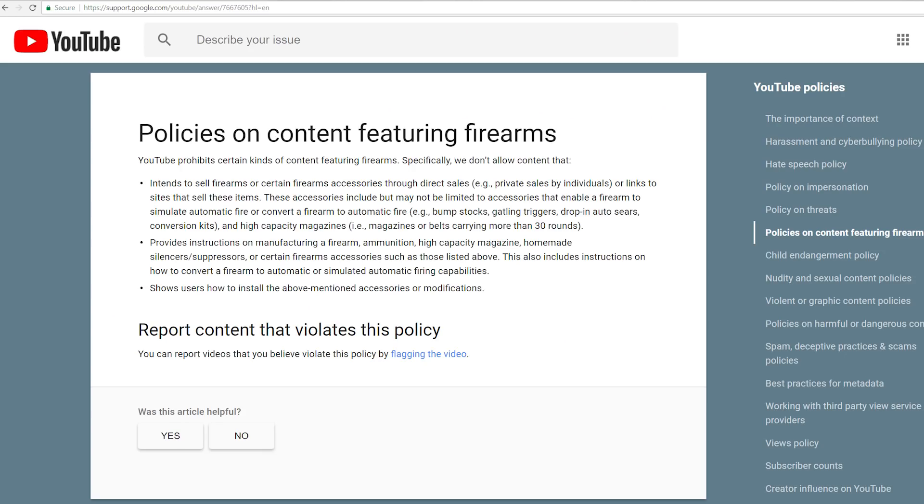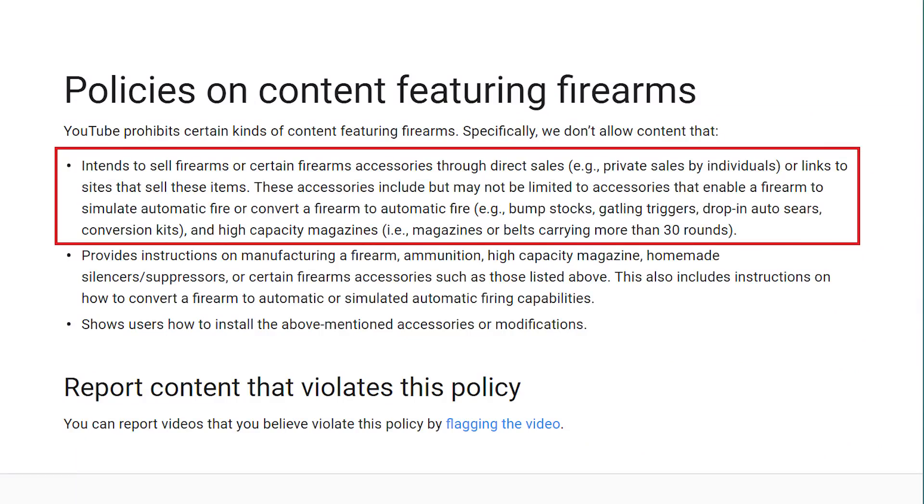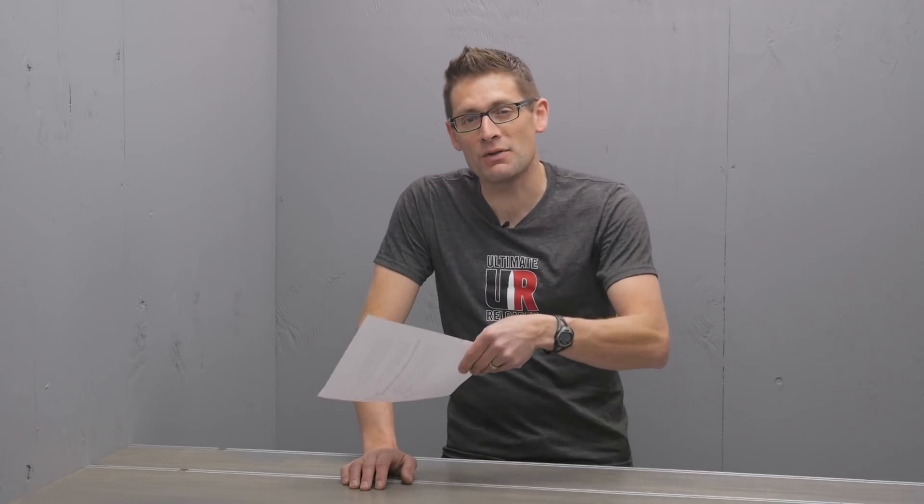Basically there's three new sections of this new set of guidelines. The first is anything related to firearms sales is now banned, essentially. Anything related to firearms accessories, anything related to increasing rate of fire - I'm paraphrasing here - but if you're selling firearms or firearm accessories or even linking to a site that does, that content is now banned.